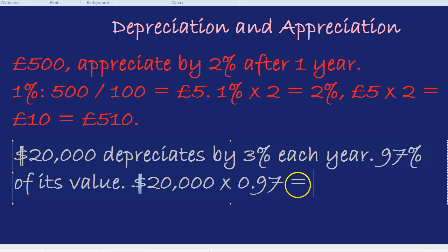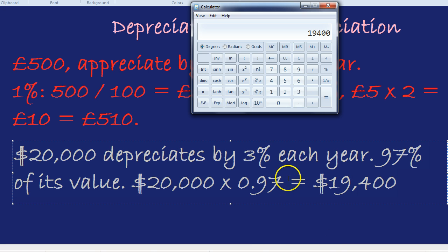$20,000 times by 0.97 is $19,400. So, after one year, it's worth $19,400. The quick way to calculate the remaining years is just times by 0.97 again. After another year, we have $18,818, and after one more year, we have $18,253. This shows you the power of depreciation and fully appreciating something.